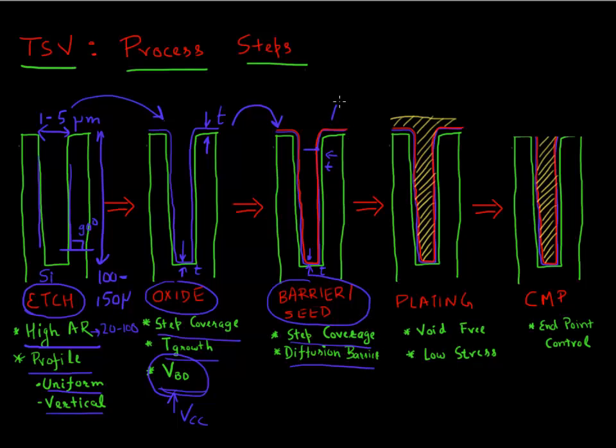The next step you do after that is once you have a barrier and a seed, you plate it. So you could plate it with copper or tungsten. And a requirement for that plating is to make this fill void free. So make sure that there are no voids left when you plate it. Another very important thing is to minimize the stress during this plating. This in fact is very important that when you're doing this fill, avoid the stress in this fill.